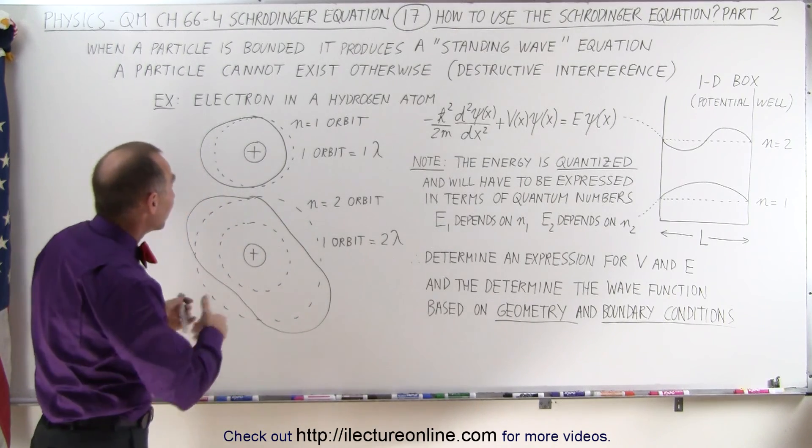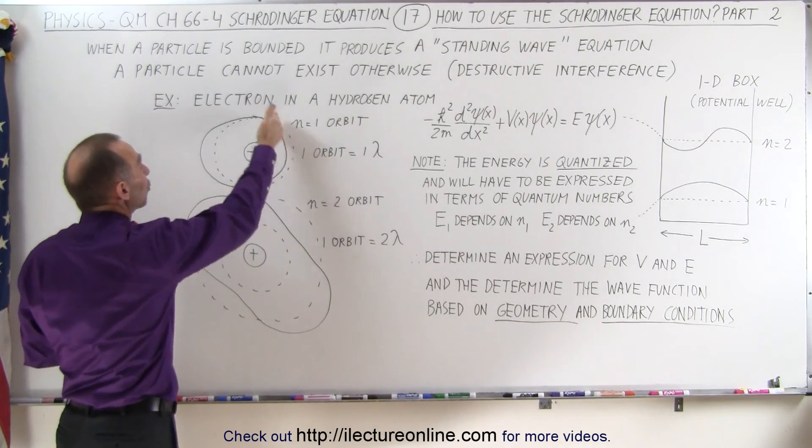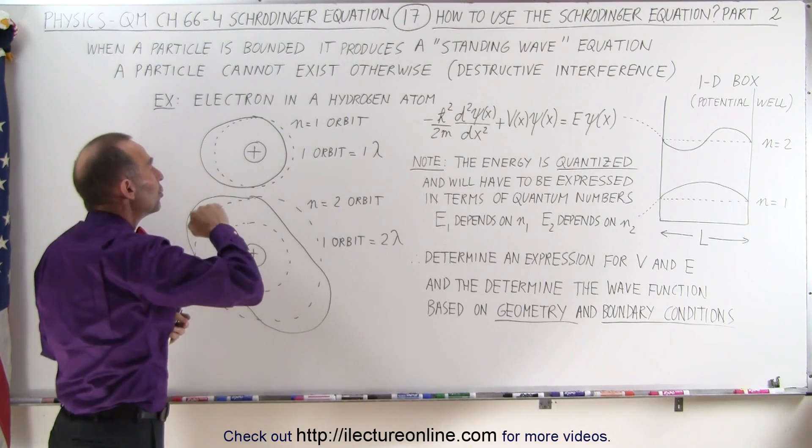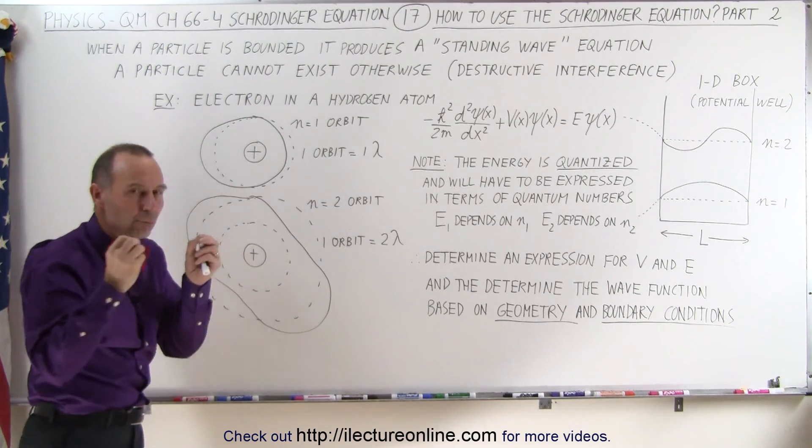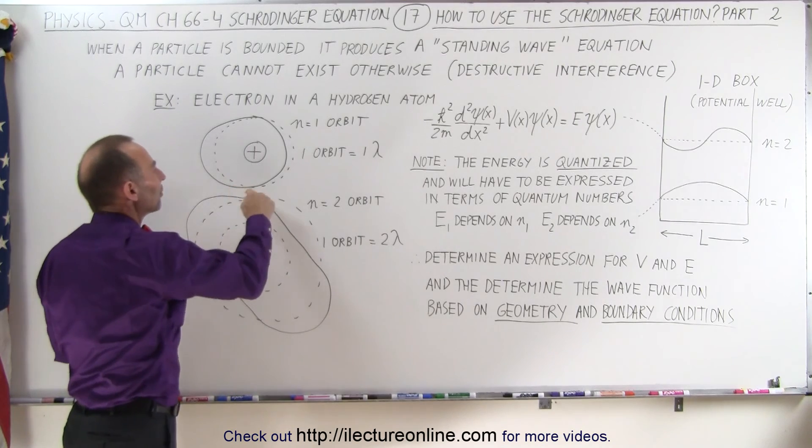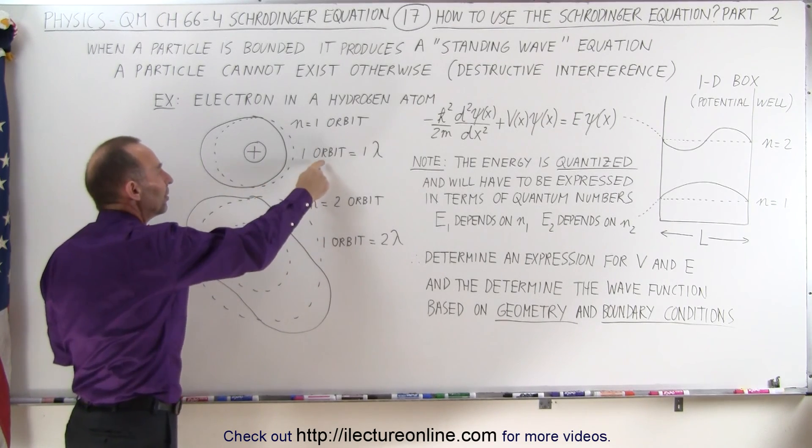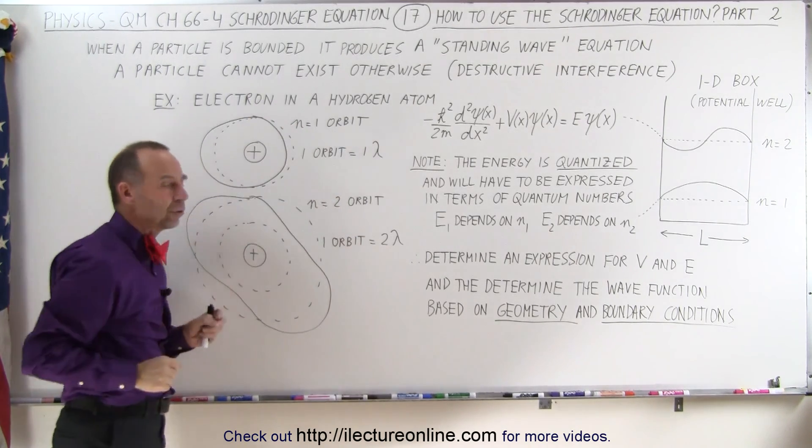For example, if a particle exists in the innermost orbit of a hydrogen atom, you can see that the particle will act as if it moves like a wave, and the wavelength of that wave is equal to the distance of one orbit around the nucleus.